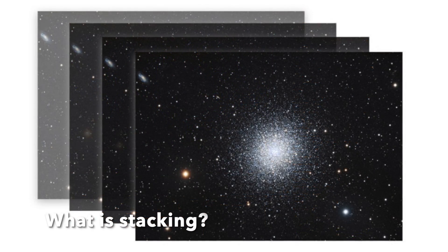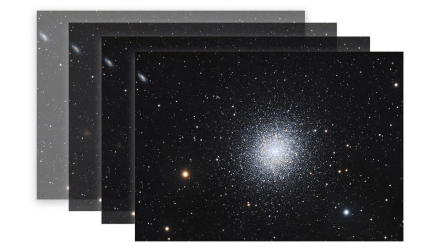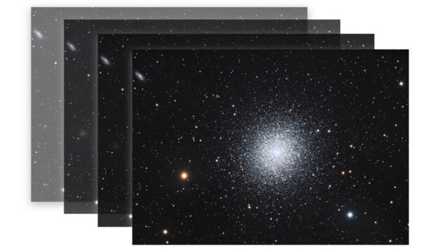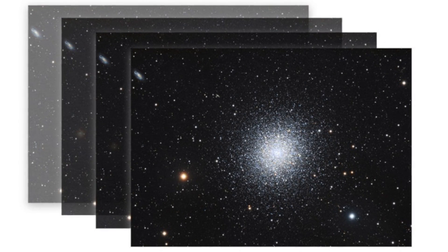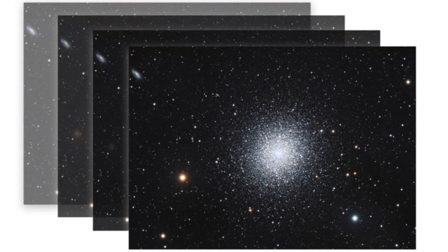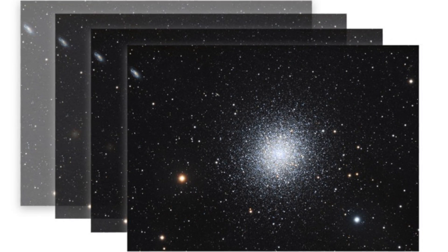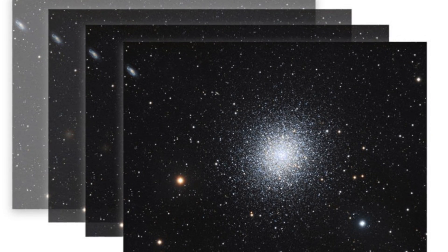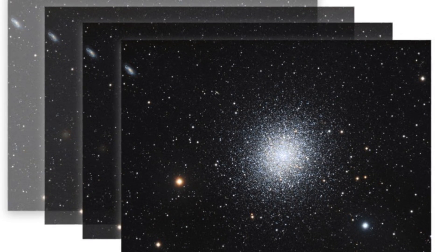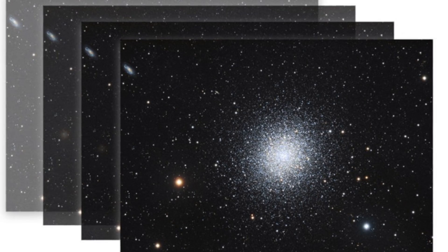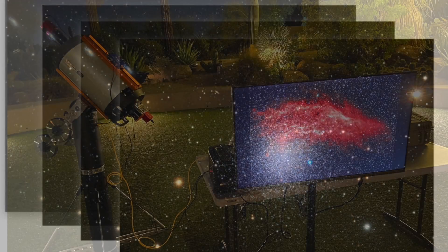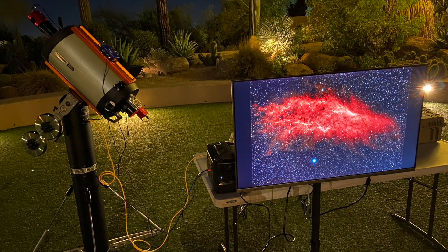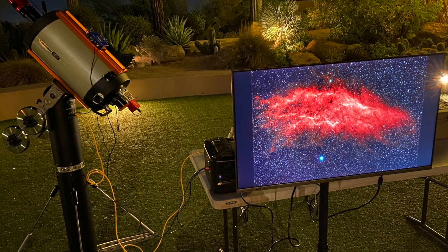With stacking, the software integrates each new picture with all the ones that came before, looking for where there's signal and where there's noise. In doing so, it improves signal-to-noise, and the longer you look at an object with a telescope, the more detail, the more contrast, the darker the background, the more dust lanes, the more filamentary nebula detail you will see. So stacking is a great thing for live presentations. You'll also need a TV monitor and stand if you want to show your images to a larger group. Inexpensive options abound on Amazon.